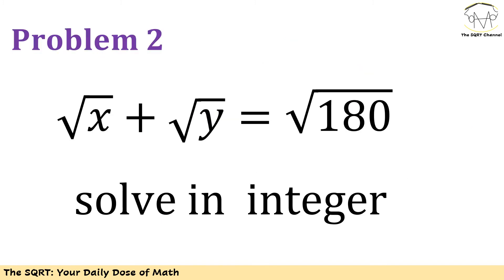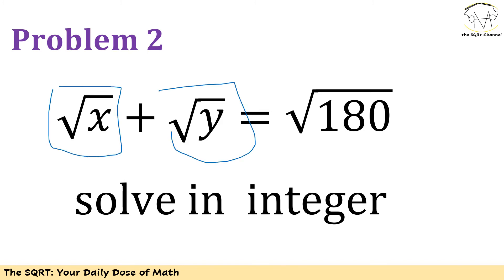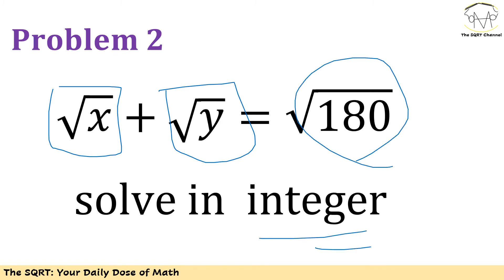Now let's move to the second problem. We have radical x plus radical y equals radical 180, and we want to solve this problem in integers. Make sure that you pause the video to think about this problem and we will see you in about 15 seconds.